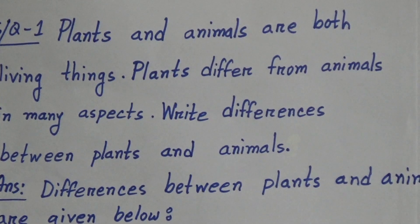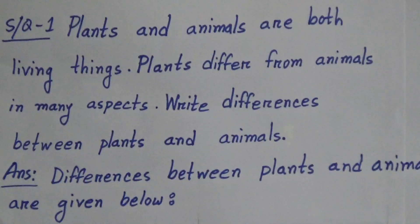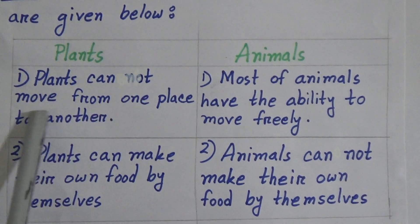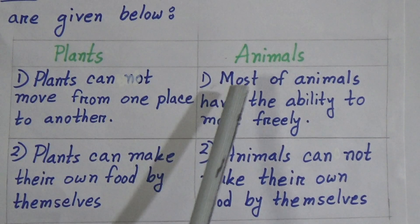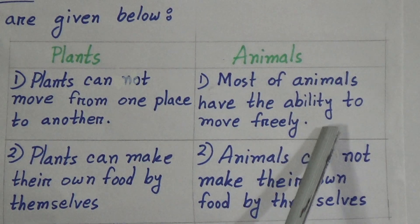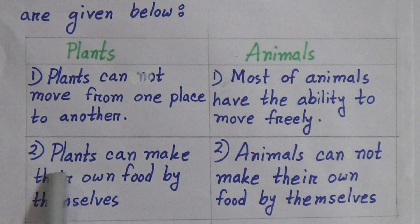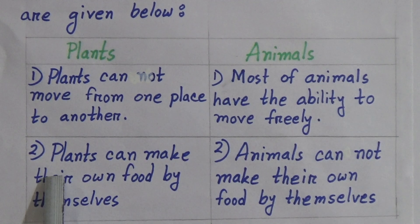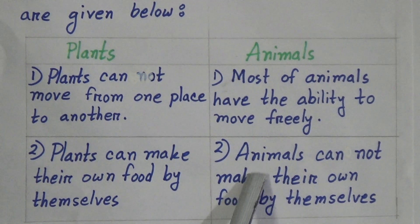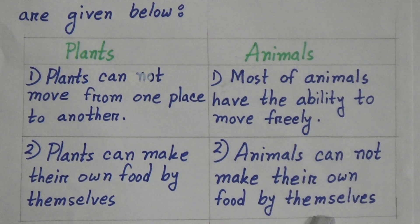Draw a table like this and write plants on the left side and animals on the right side. One: plants cannot move from one place to another, whereas most animals have the ability to move freely. Two: plants can make their own food by themselves, whereas animals cannot make their own food by themselves.